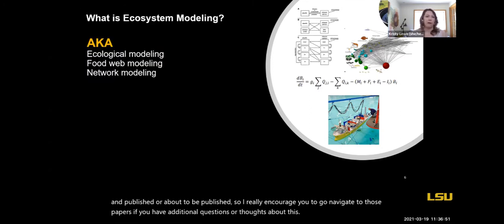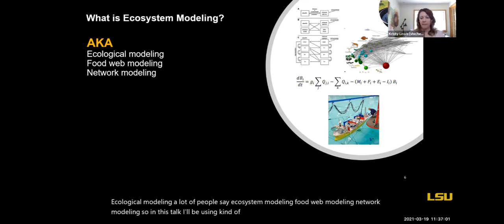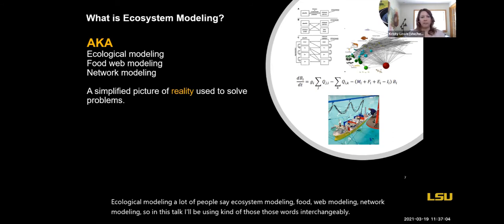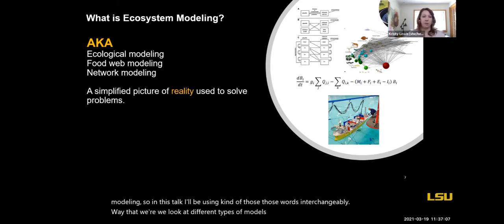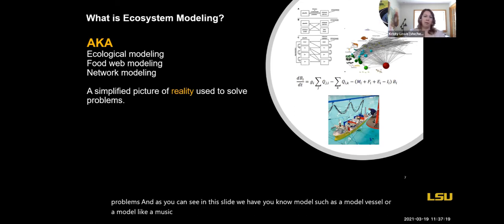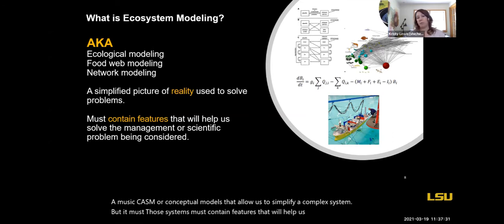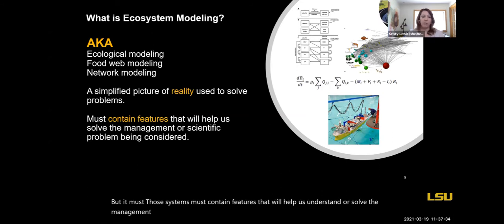I want to talk about ecological modeling — a lot of people say ecosystem modeling, food web modeling, network modeling, so in this talk I'll be using those words interchangeably. The way we look at different types of models: they are a simplified picture of reality to solve problems. We have models such as a model vessel, a mesocosm, or conceptual models that allow us to simplify a complex system, but those systems must contain features that will help us understand or solve the management or scientific question being considered.